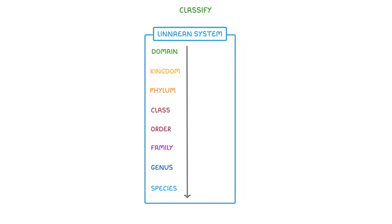When it comes to remembering the order of all these groups, the best strategy is to find a good mnemonic, which is just a phrase you use to help you remember terms in a list. For example, if you remember 'Dear Kate, please come over for great spaghetti,' then you'll be able to work out the order of domain, kingdom, phylum, and so on, because the first letters of each word are the same. And of course, feel free to change around a couple of the words to make it easier to remember.